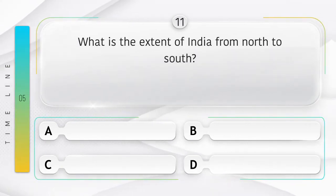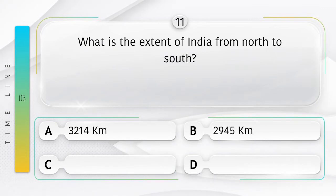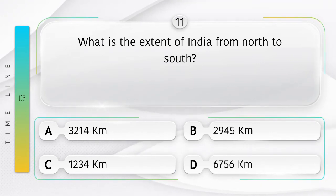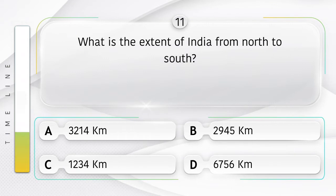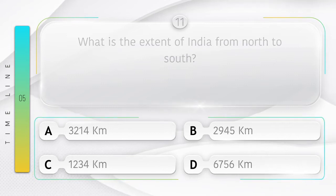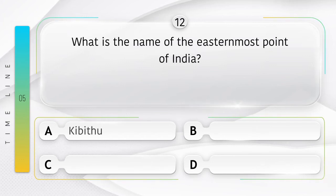What is the extent of India from north to south? Option A: 3,214 kilometers, B: 2,945 kilometers, C: 1,234 kilometers. Answer is option A: 3,214 kilometers.